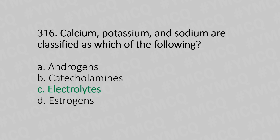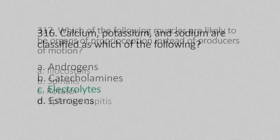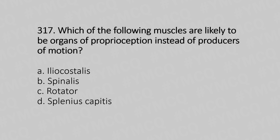Question 317: Which of the following muscles is likely to be an organ of proprioception instead of a producer of motion? Option A: iliocostalis. Option B: spinalis. Option C: rotator. Option D: splenius capitis. The answer is Option C, rotator.